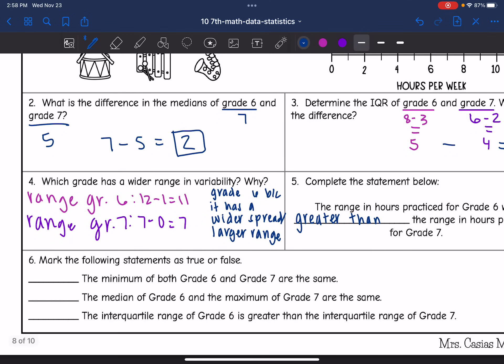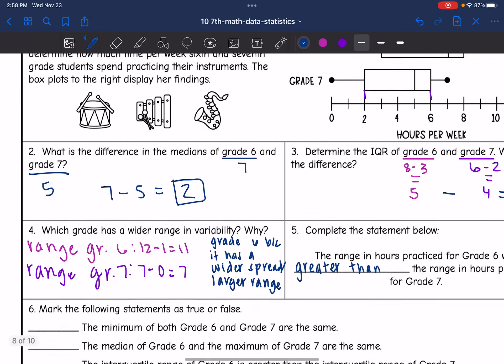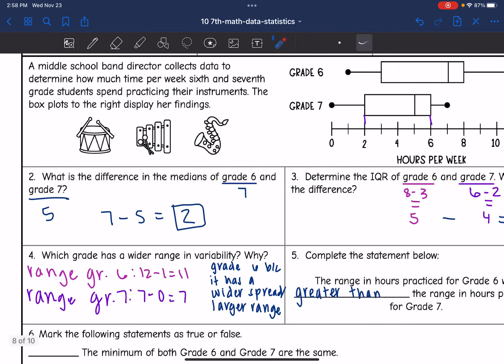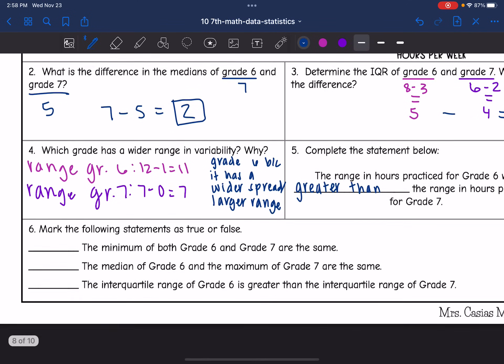Then we have three statements at the bottom that we're going to mark as true or false. So the first one says the minimum of both grade six and grade seven are the same. That is false. Grade seven has a minimum of zero. Grade six has a minimum of one.